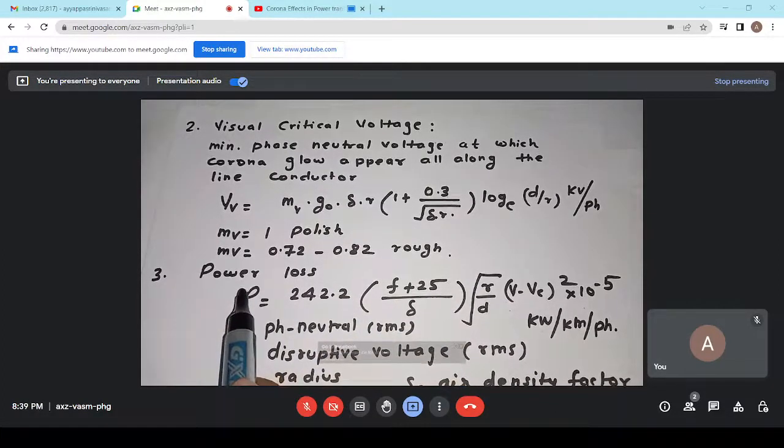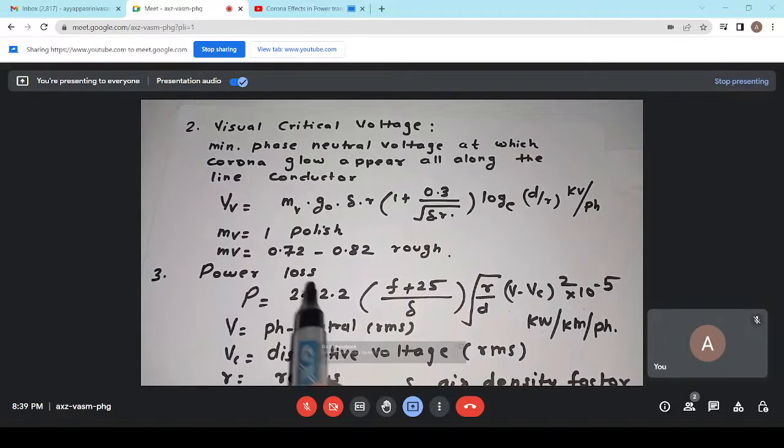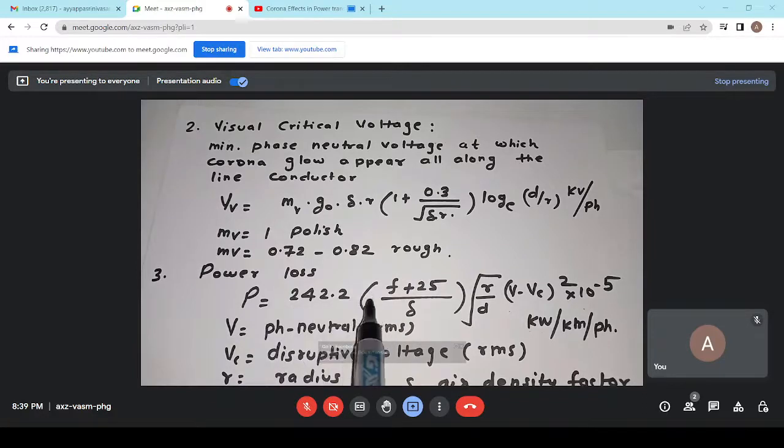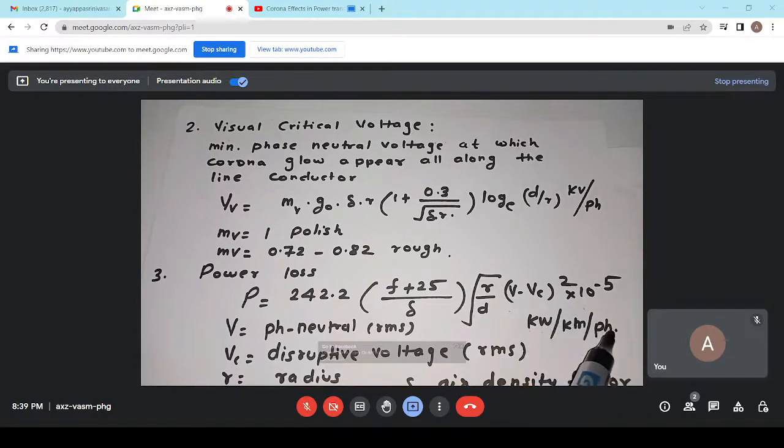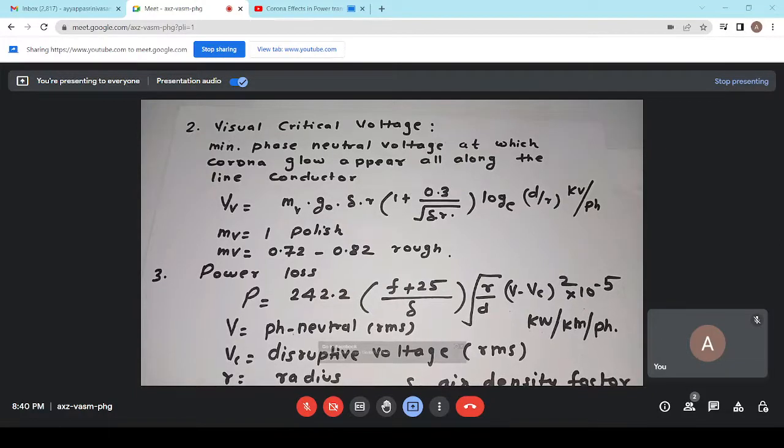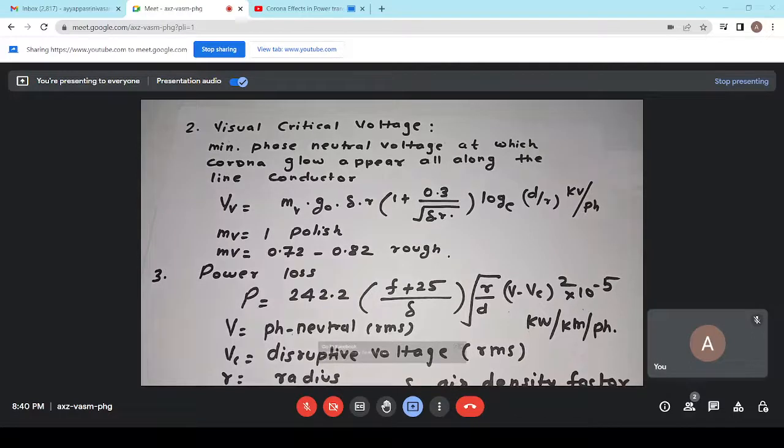Now, the third term is very much important. Due to corona effect, there is some power loss and that power loss we can calculate by this formula is equal to 242.2 into F plus 25 by delta into under root R over D V minus Vc square into 10 raise to minus 5 kilowatt per kilometer per phase. Here we can see V is the phase neutral voltage RMS. Vc is the critical disruptive voltage in RMS. R is radius, D is spacing, F is frequency and delta is usual air density factor. This is all about the corona effect in the power transmission line. Thank you very much.